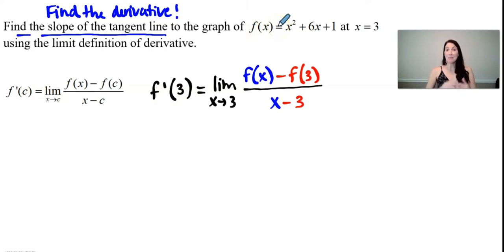Now we just need to plug in our information. Now we need to make sure to keep the limit notation here. And then we first have f(x). And our function is x² + 6x + 1.